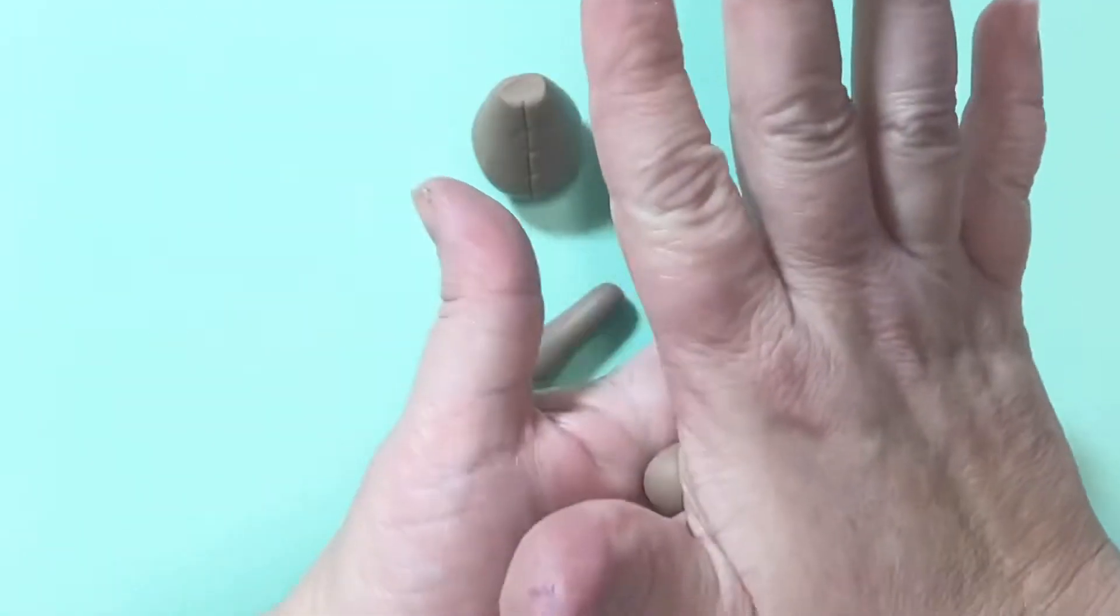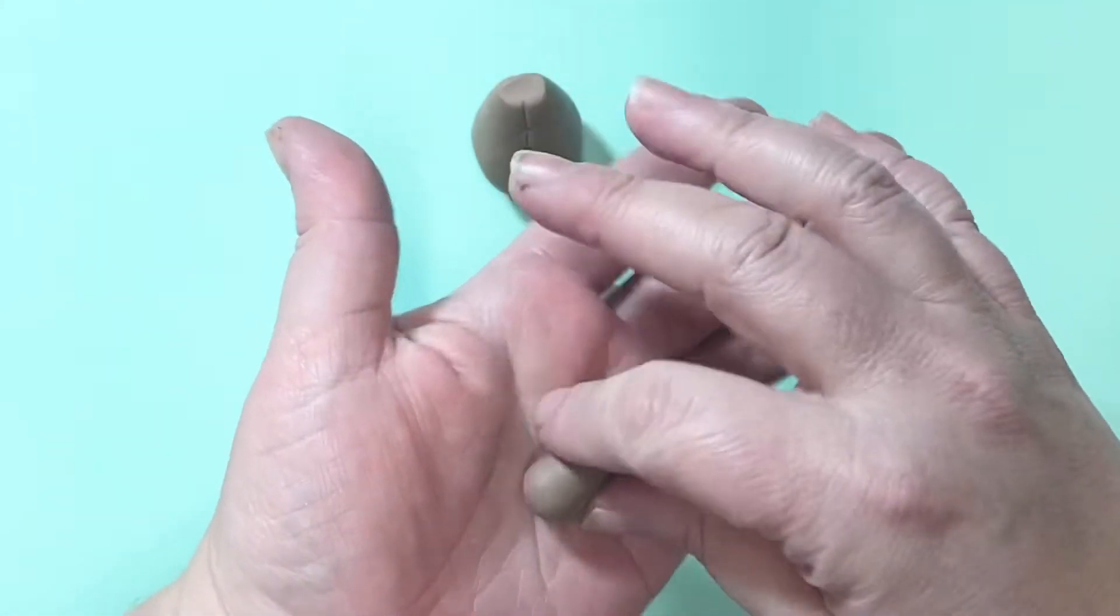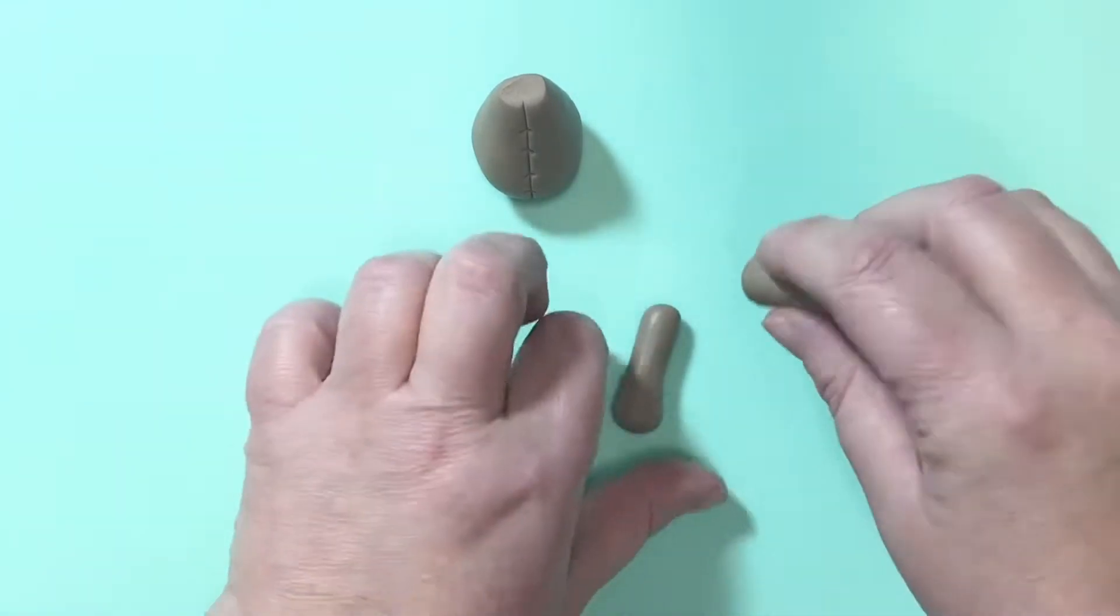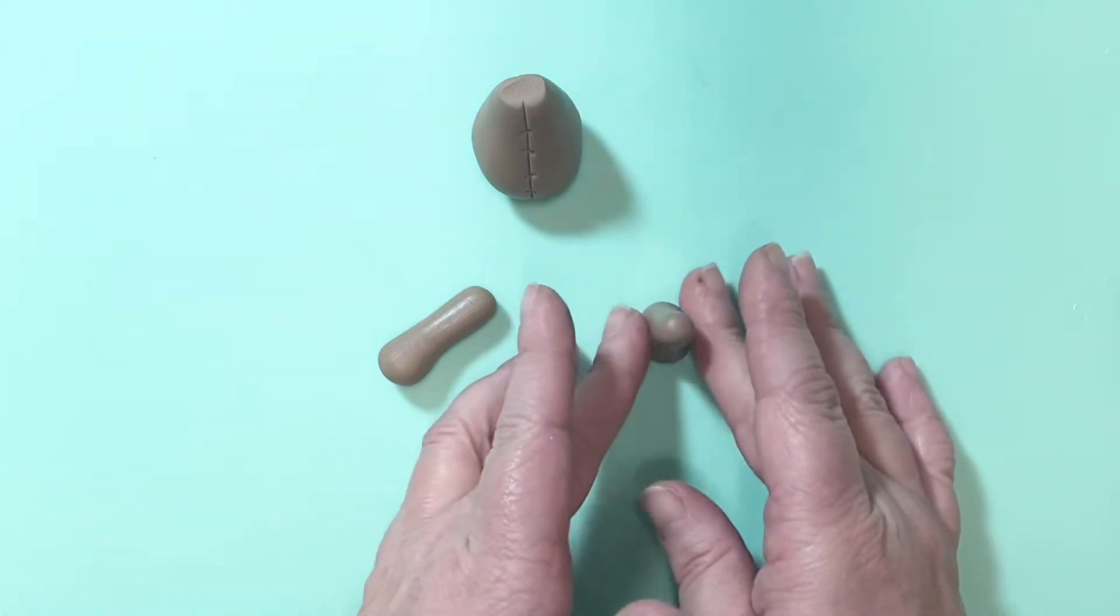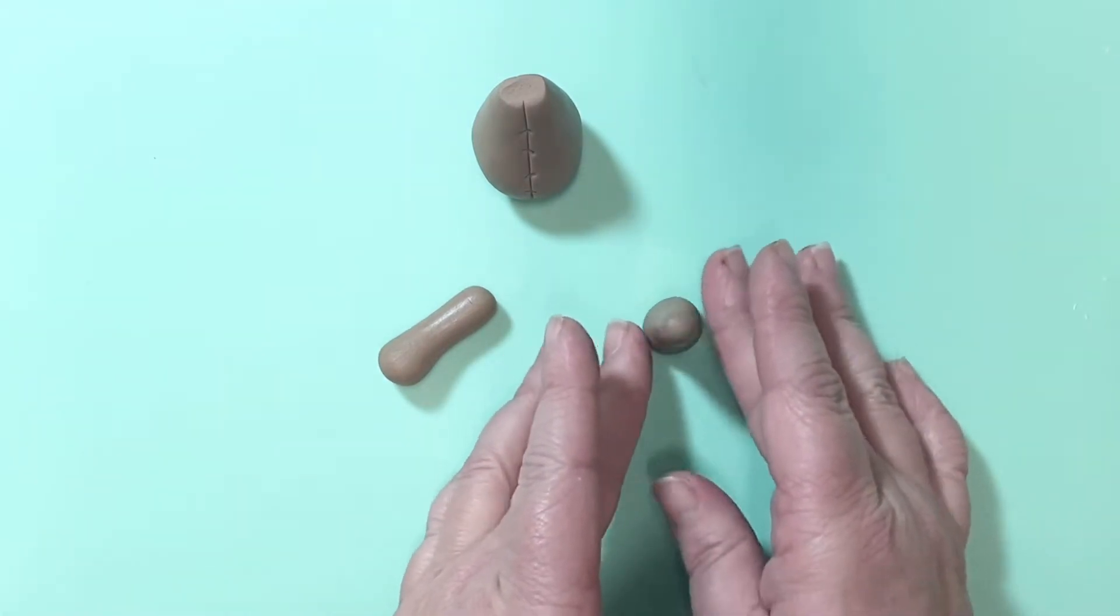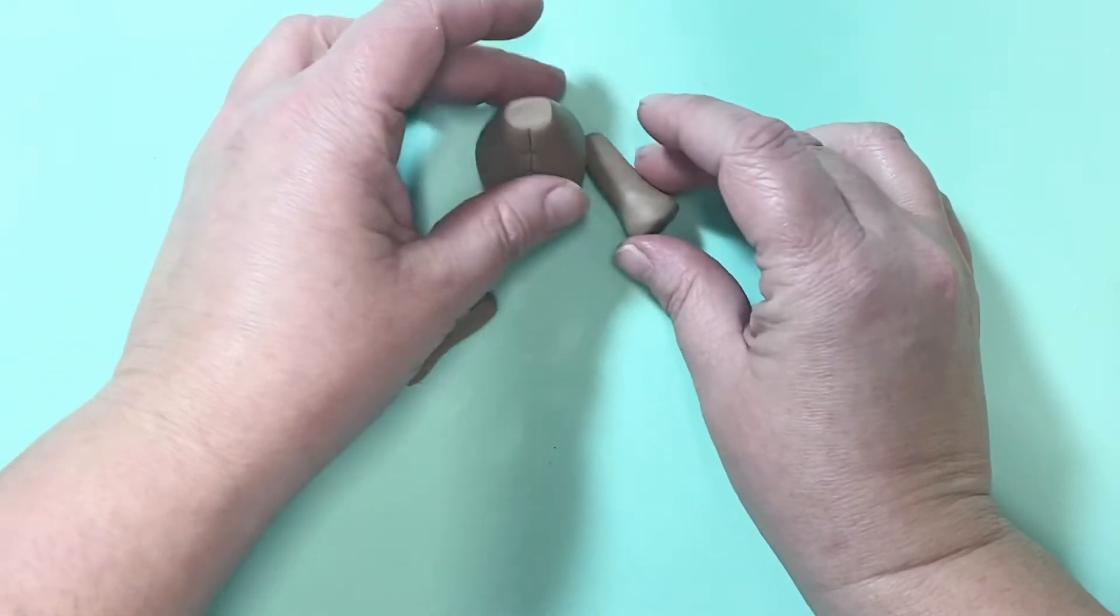Do your second leg and shape it the same way. Now place the leg upright on your mat because I want flat pads on the bottom of my feet. So push it down on your mat and just twist gently between your fingers, pushing down towards your mat as you go along and you will see you'll have a nice little flat foot to fit a pad on.